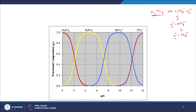Looking at our example: we have phosphoric acid with the ionization fraction on the y-axis and pH on the x-axis. Phosphoric acid can donate 3 protons in total depending on the pH, so we end up having 3 pKa values. They are approximately 2.3, 6.7 or 7, and 12.2 or 12.3 - approximate values.